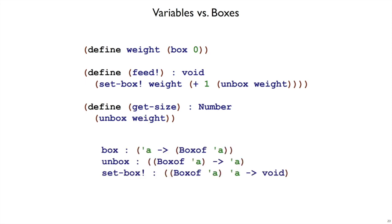The three plate operations then are box to create a new box. Given any value, you get a box of that value. Unbox, where given a box of a value, you get the value out. And setBox, where given a box that has some kind of value in it, and given the same kind of value, but a new one, to put into it, then setBox will change the value inside of the box.